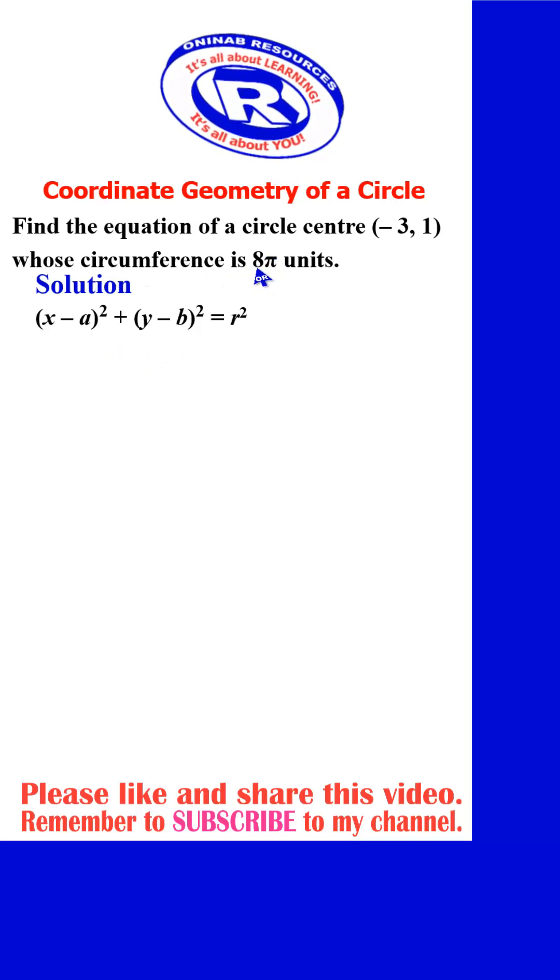but we can get the radius from the circumference. Knowing that circumference of a circle is 2πr, we then substitute the circumference, which is 8π equals 2πr. Making r the subject of the relation, I have 8π divided by 2π, giving us 4. So we have the radius now to be 4.